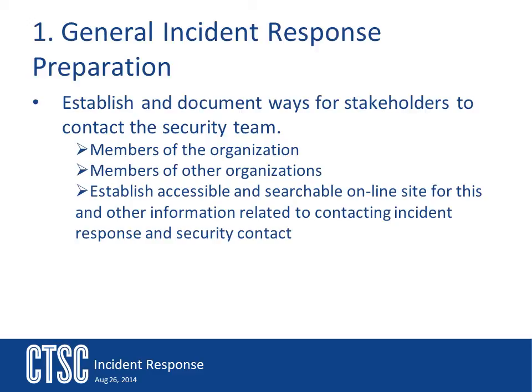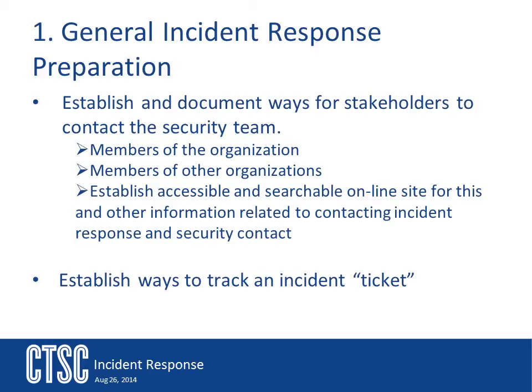Another basic item needed when developing an incident response plan is some kind of trouble tracking ticket system. These systems become important when tracking an incident and help you verify that you've covered everything. It's not uncommon for one main alert to go off while also having multiple other things going on at the same time. Unless you are very organized, it becomes easy to lose sight of some of the smaller things. Having a tracking system allows you to capture everything, verify that everything has been addressed, and identify who is working on what and when.